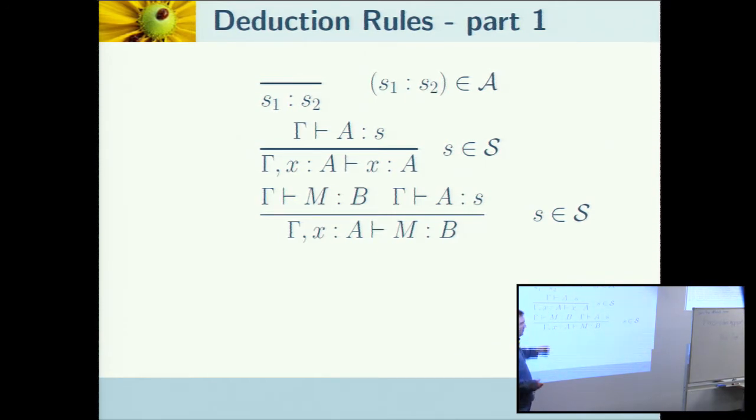This next one, this capital gamma is just basically any other information you've got. So basically, just giving an example of using that one. You can deduce that if x is a proposition, then x is a proposition. That's fairly obvious.